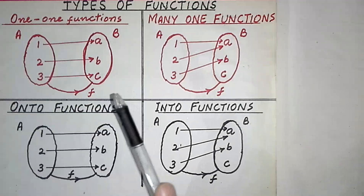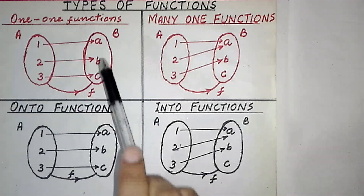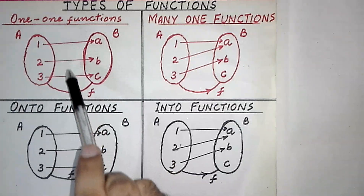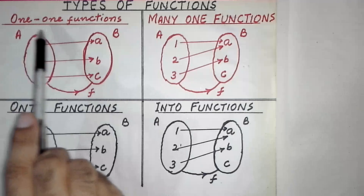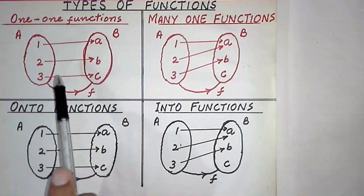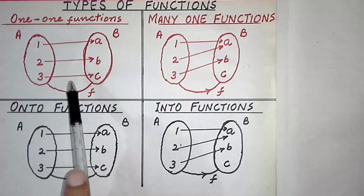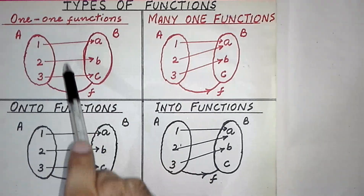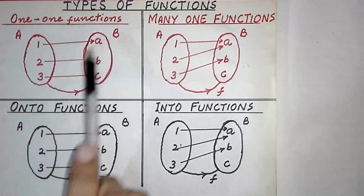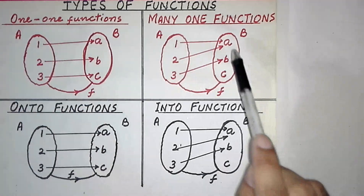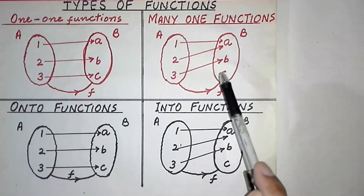Here we discuss different types of functions. If the second elements of all ordered pairs of a function are non-repeated, then the function is called a one-one function or injective function. The state lines here represent ordered pairs, and the second elements of all ordered pairs are non-repeated, so this is an example of a one-one function.